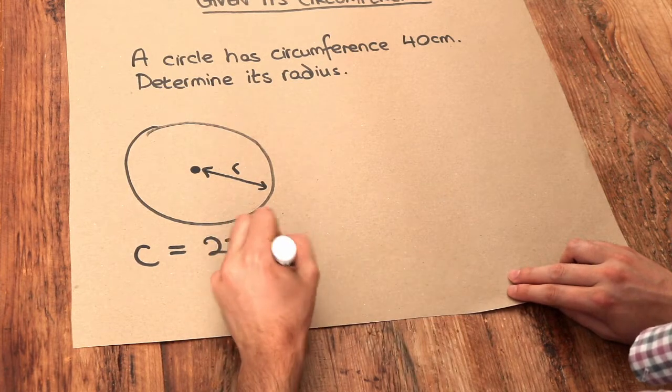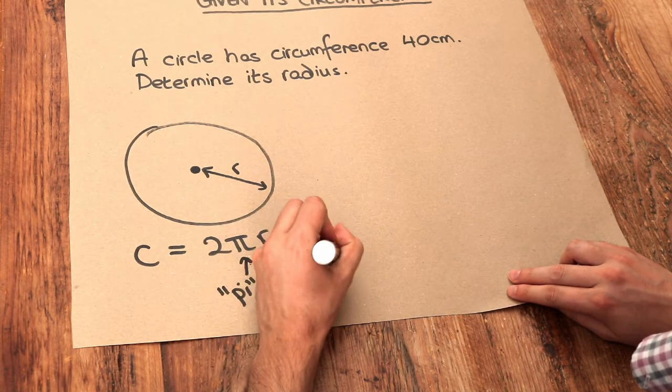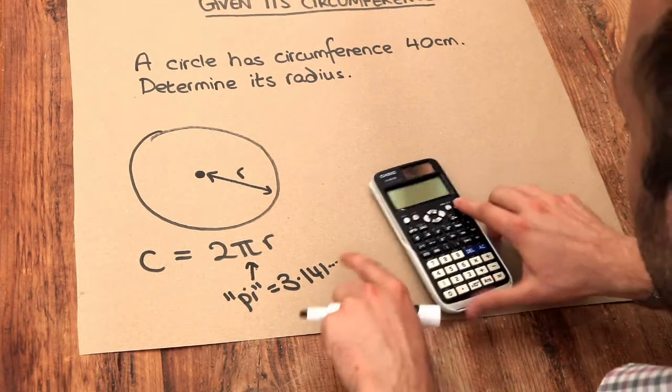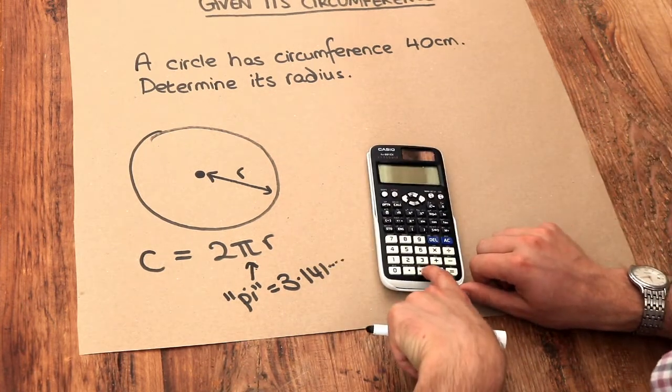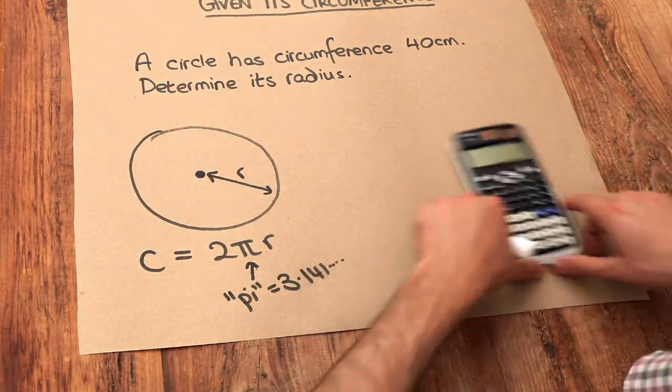It has a value of 3.141, etc. The digits go on forever. And remember you can get the π in your calculator by just doing shift and then that golden π symbol there, or it might be different depending on what calculator you have.